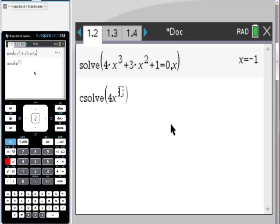I'm going to put 4x cubed. I'm just taking the one from the top, using my right-hand cursor to get over out of that exponent. Plus 3x squared plus 1, equals 0. Remember, it's comma x, which means in terms of comma x.